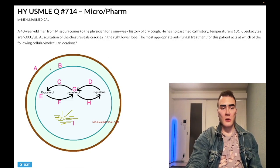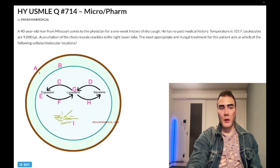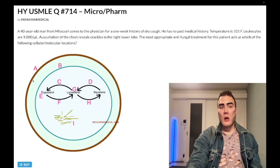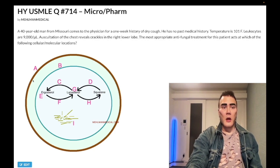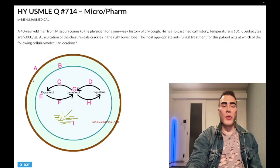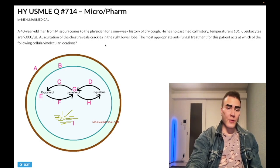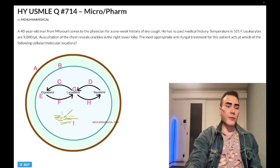Choice A, wrong answer, refers to caspofungin, micafungin, the echinocandins. They inhibit beta-1-3-glucan synthase, so beta-glucan carbohydrate synthesis. USMLE doesn't really care about the use cases of the echinocandins per se. Essentially invasive aspergillosis, but USMLE doesn't really care. What they will do is just simply mention caspofungin or micafungin in the stem and then just want you to know the answer: beta-glucan carbohydrate synthesis or carbohydrate cell wall synthesis. Wrong answer.